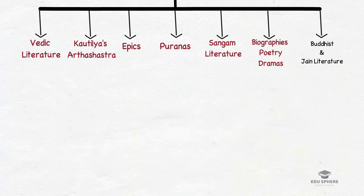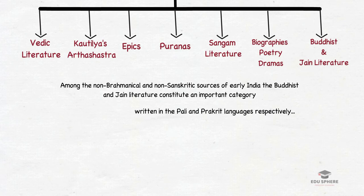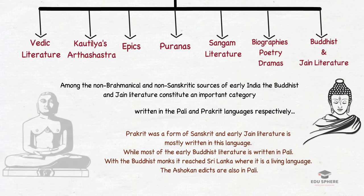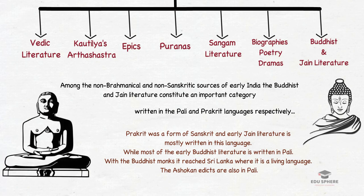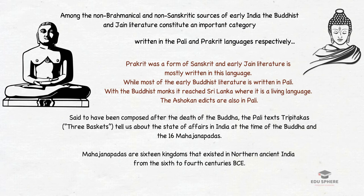Next and importantly are the Buddhist and Jain literature. Among the non-Brahminical and non-Sanskrit sources of early India, Buddhist and Jain literature constitute an important category, written in Pali and Prakrit languages respectively. Buddhism has its own set of sacred texts known as Tri Pitaka, comprising the teachings of Buddha collectively known as Dharma. Broken down into three sections, each part carries the name Pitaka or 'basket' — hence the westernized term 'Three Baskets.' The Pali texts tell us about the state of affairs of India at the time of Buddha and the sixteen Mahajanapadas.